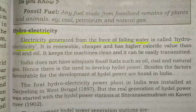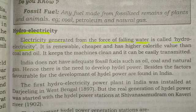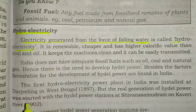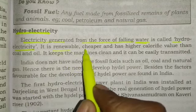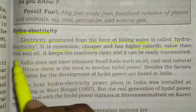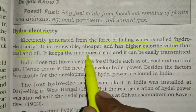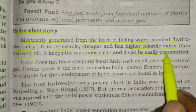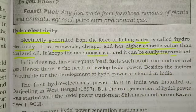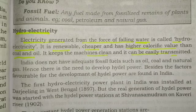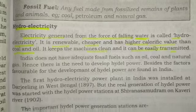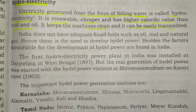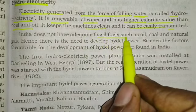As we discussed in the previous class, some resources are renewable and some are non-renewable. For example, petroleum and coal are non-renewable resources. But hydroelectricity and water are renewable resources. Hydroelectricity is renewable, cheaper, has higher calorific value than coal and oil, keeps machines clean, and can be easily transmitted. India does not have adequate fossil fuels such as coal and natural gas.